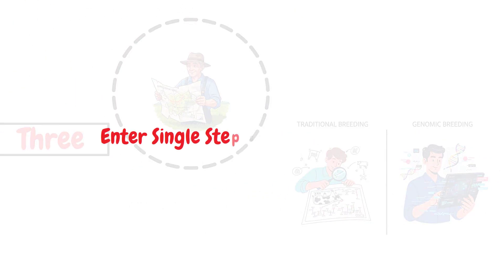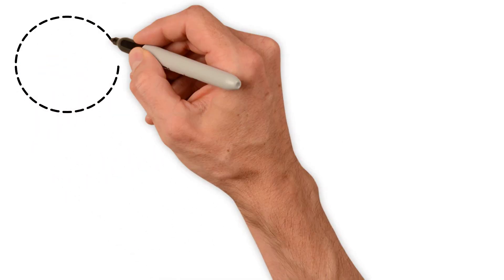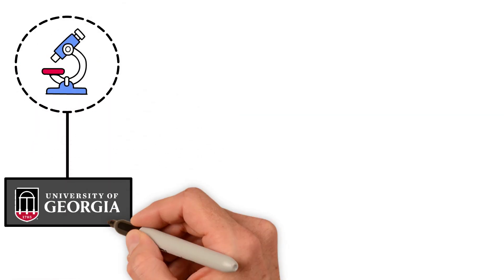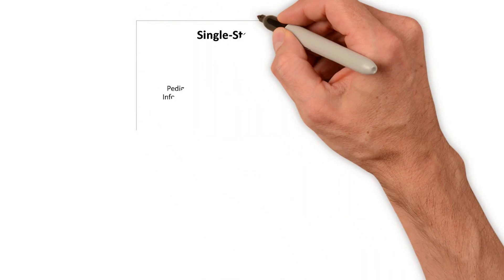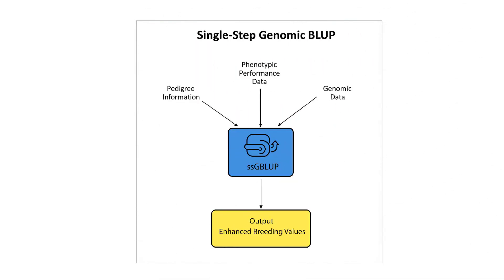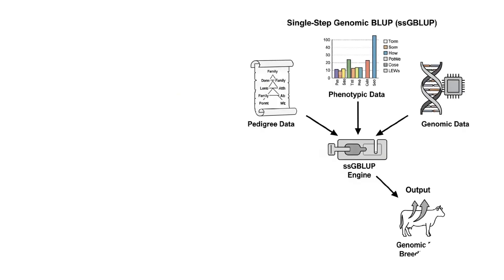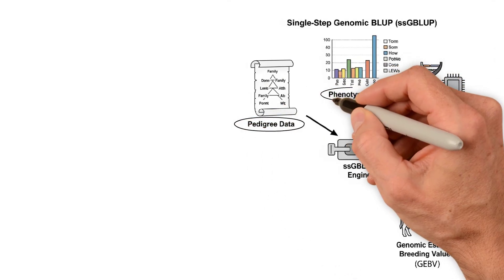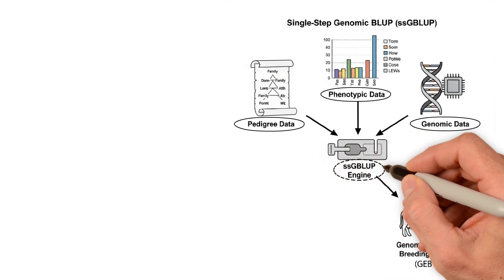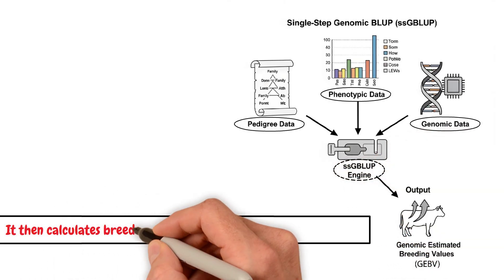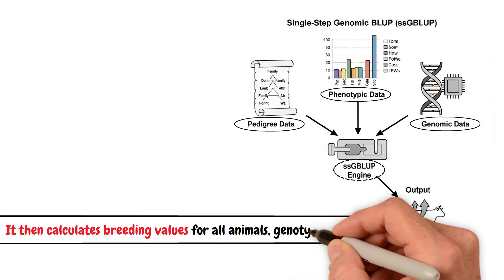Enter single-step genomic prediction. To solve this, researchers in the US and around the globe have developed a smarter approach: single-step, short for single-step genomic BLUP. Instead of going through a series of steps to integrate pedigree and genomic data, single-step combines everything – pedigree, performance, and genomic info – into one single model. It then calculates breeding values for all animals, genotyped or not.